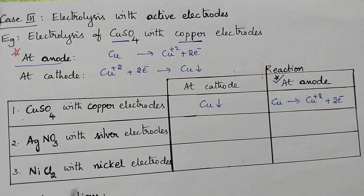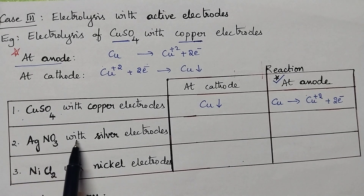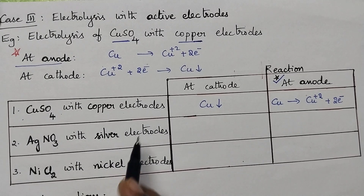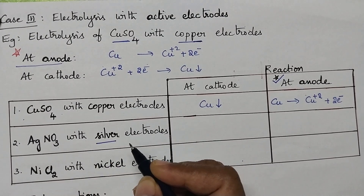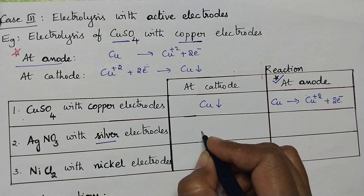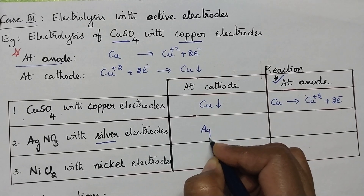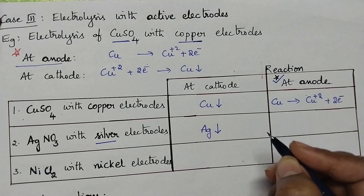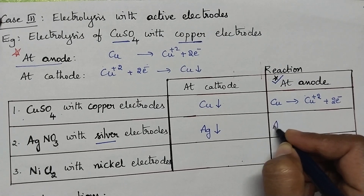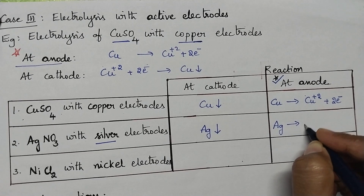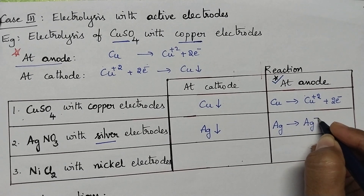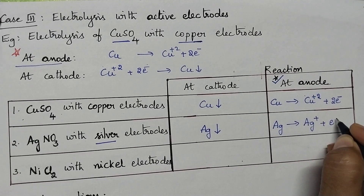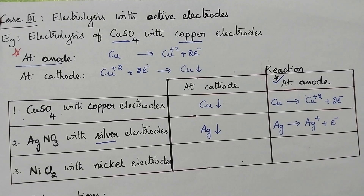Coming to the electrolysis of AgNO₃ solution with silver electrodes — here again these are active electrodes. No change takes place at the cathode in terms of process: silver will be deposited. At the anode, silver starts dissolving, so Ag will be converted into Ag⁺ ions with the liberation of electrons.